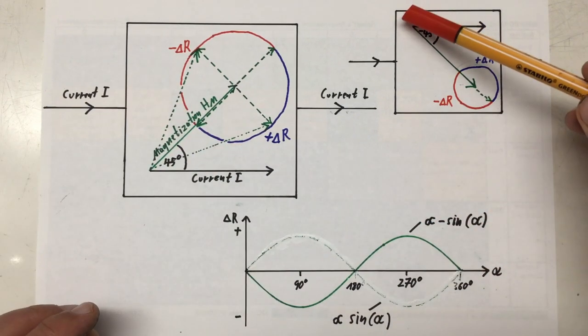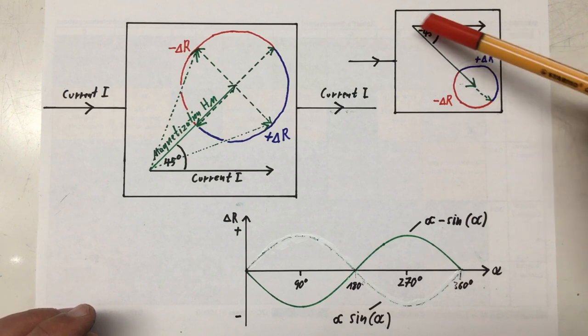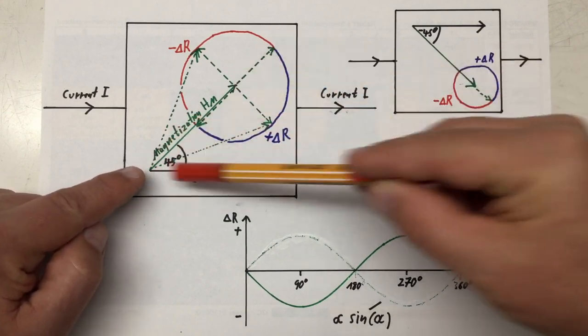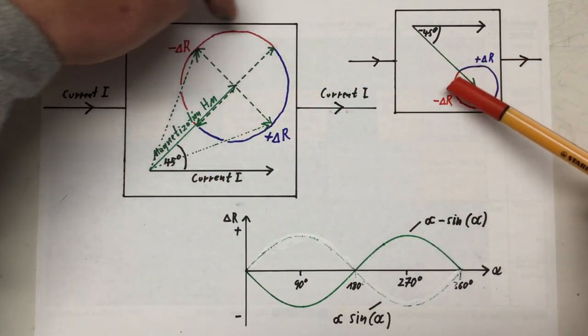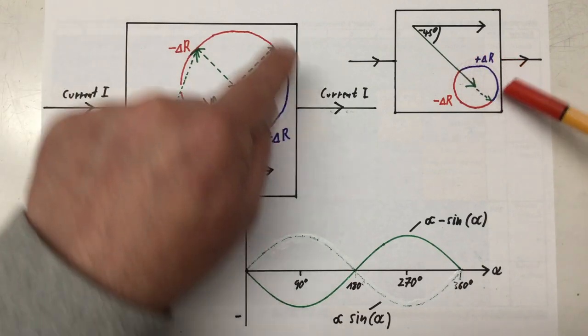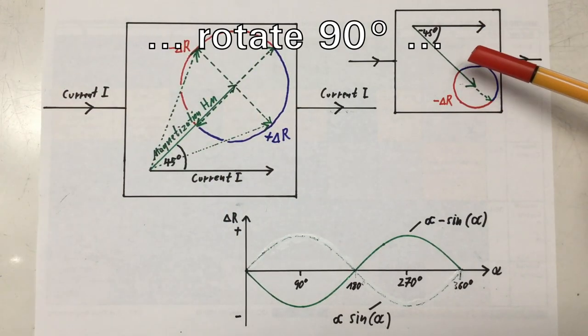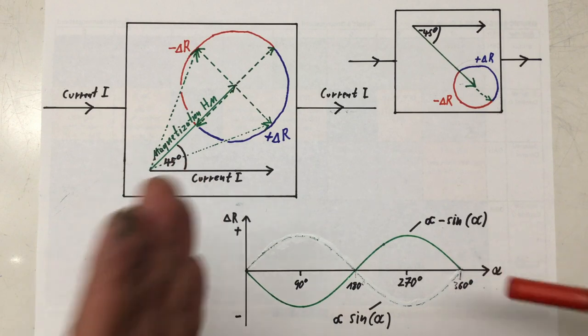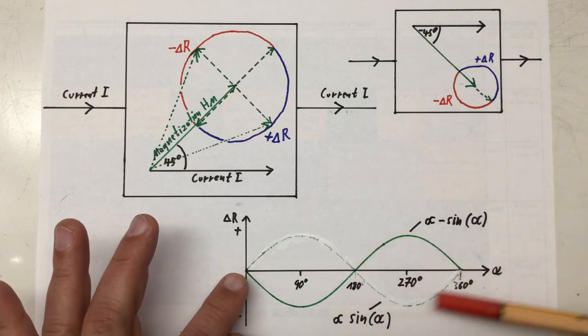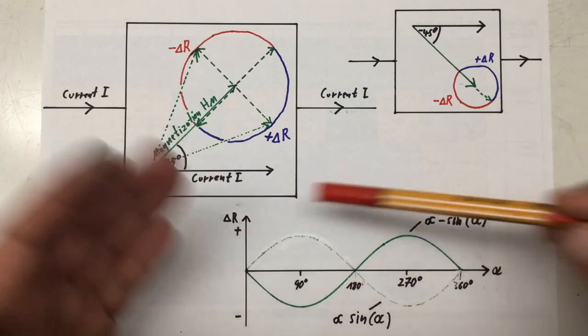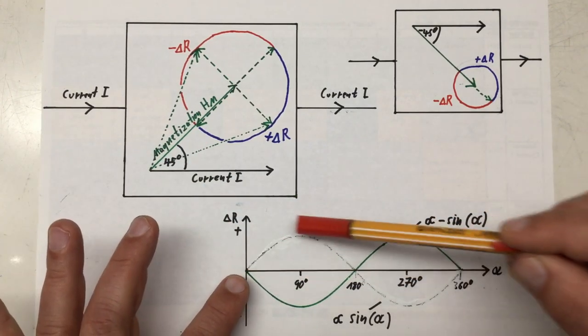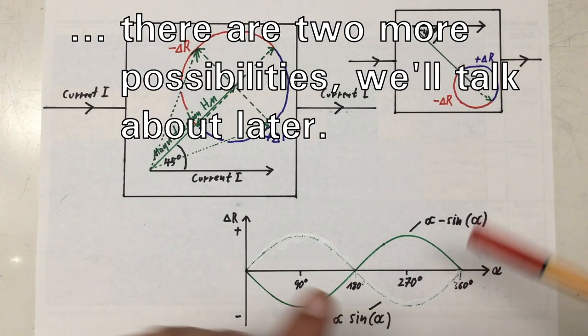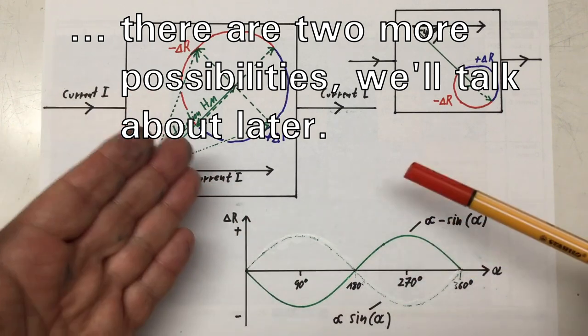Now, if we would have pre-magnetized our perm alloy film at an angle of minus 45 degrees relative to the current flow instead of 45 degrees, then our zones of decreased resistance and increased resistance would flip around, of course. And that would lead in our plot here to a 180 degree phase shift. That's the barely visible dotted line here. And that line is proportional to the sine of our angle alpha. Keep that in mind. It will come in handy in a minute.